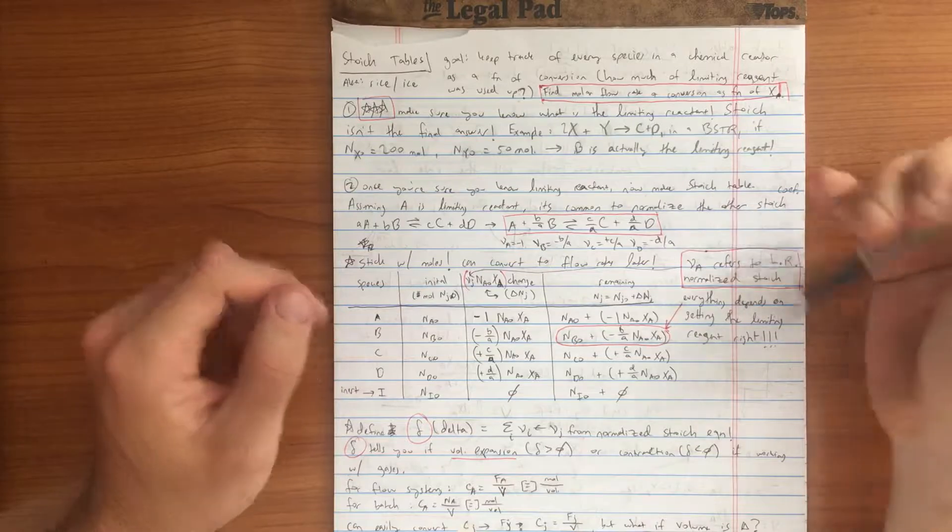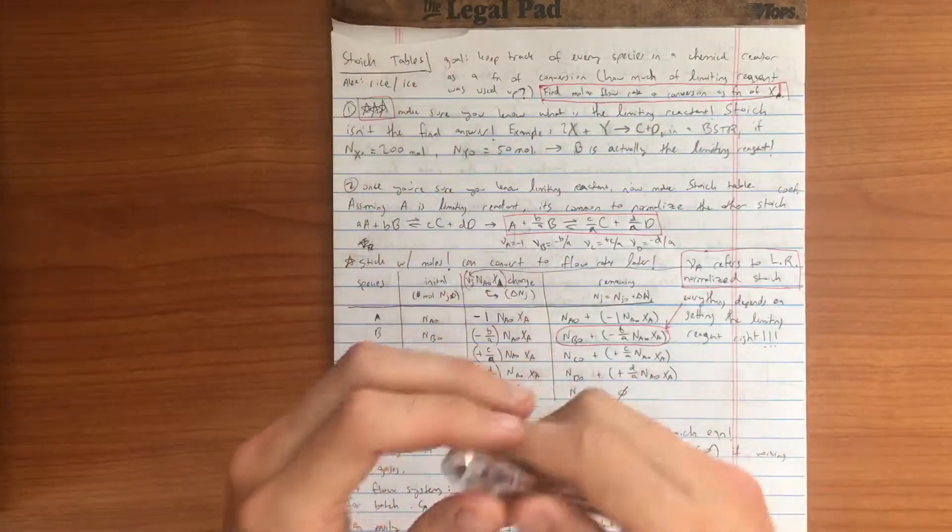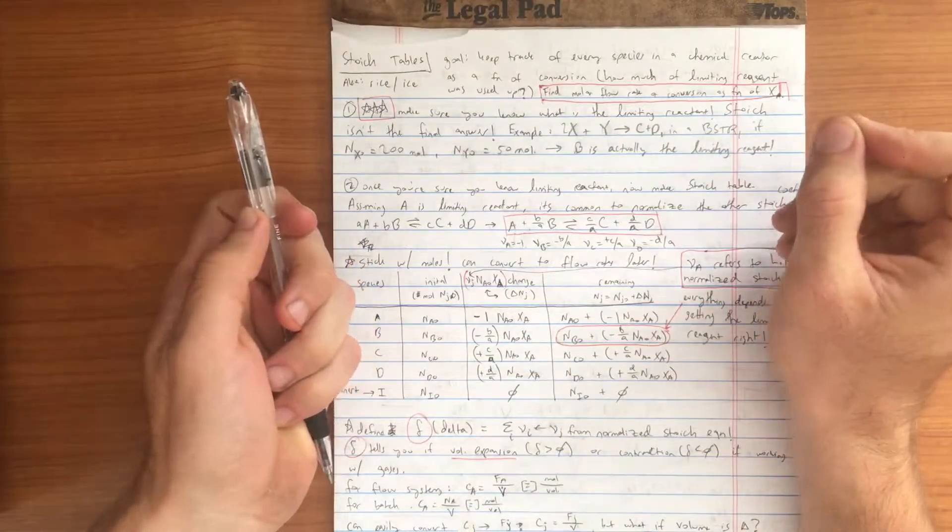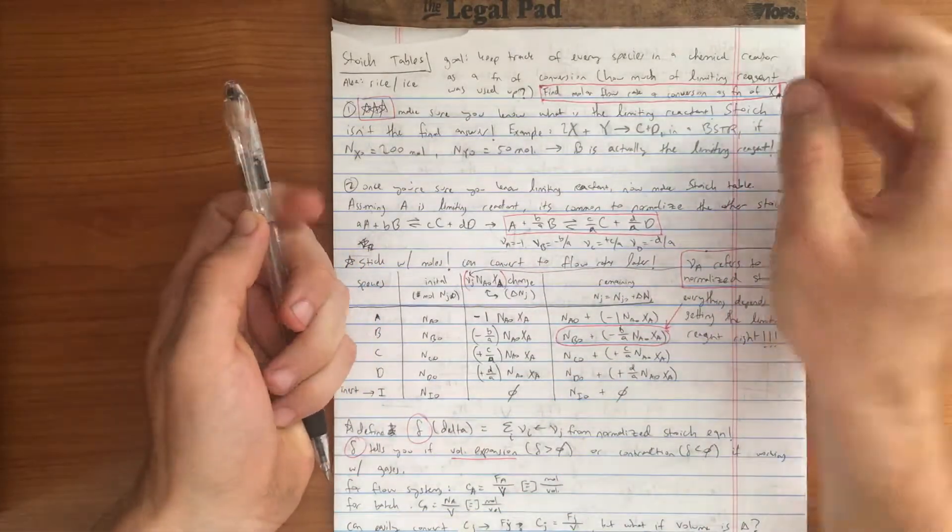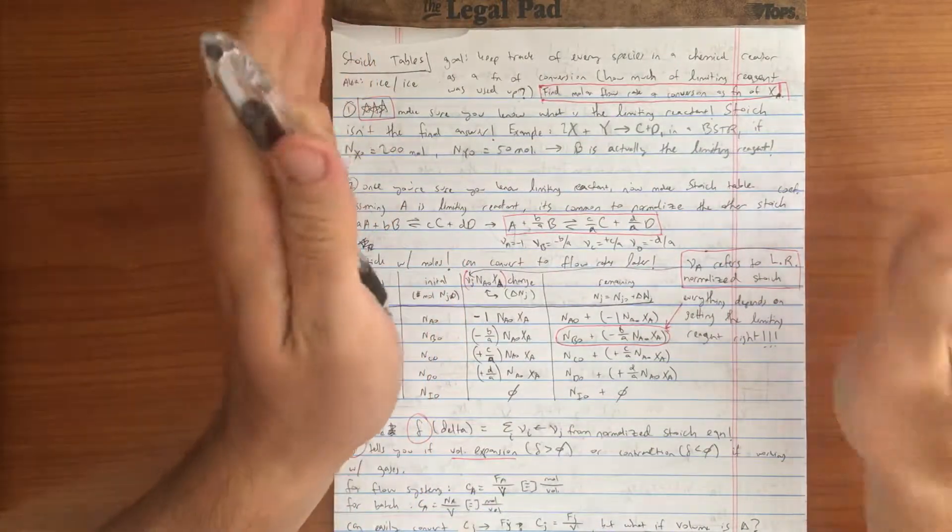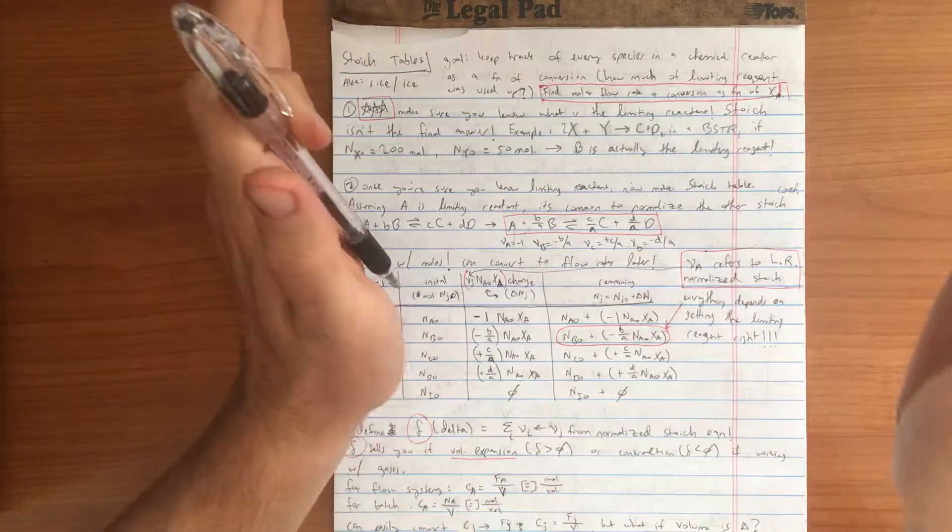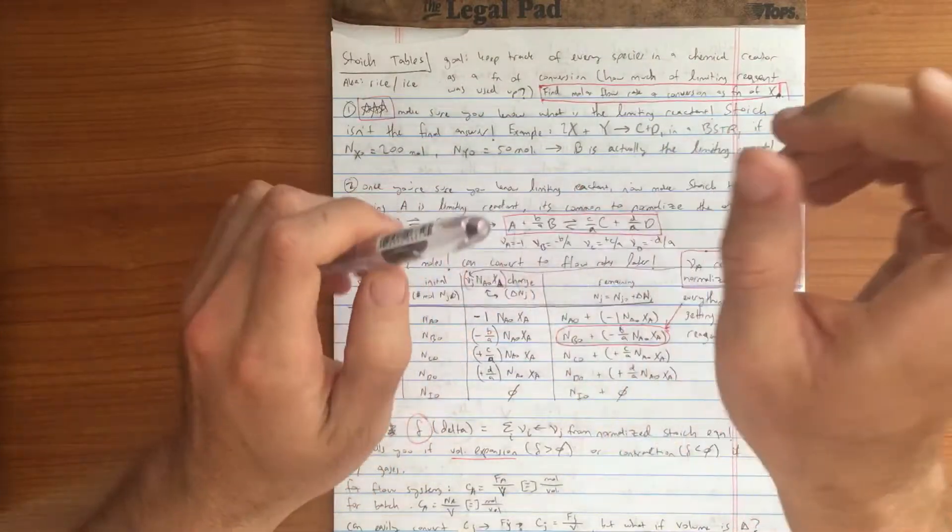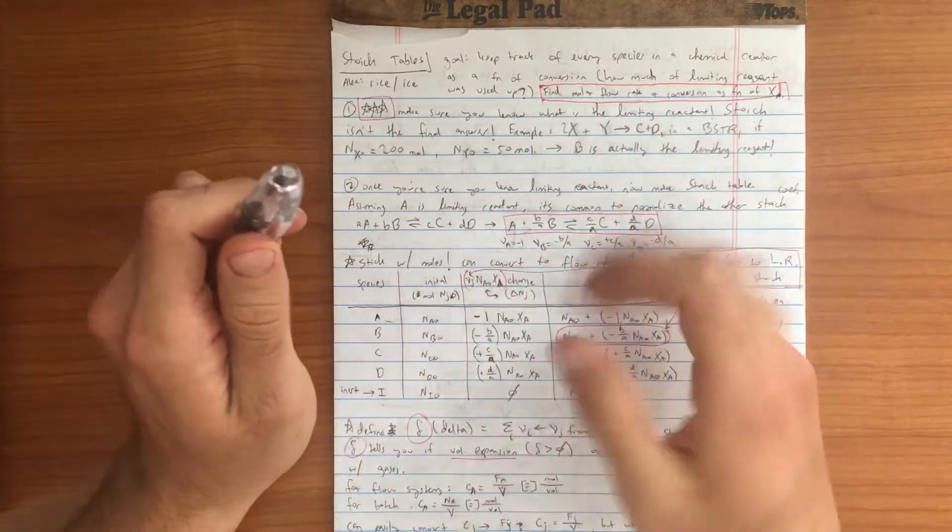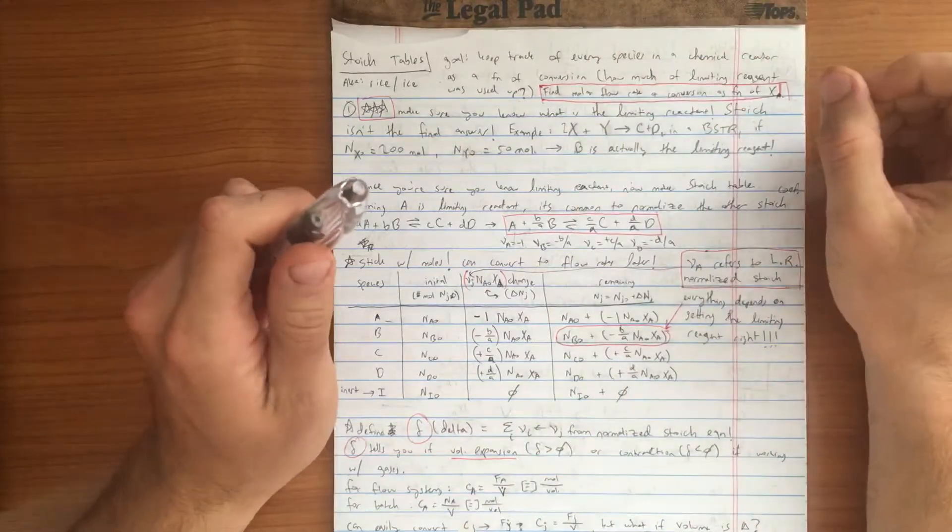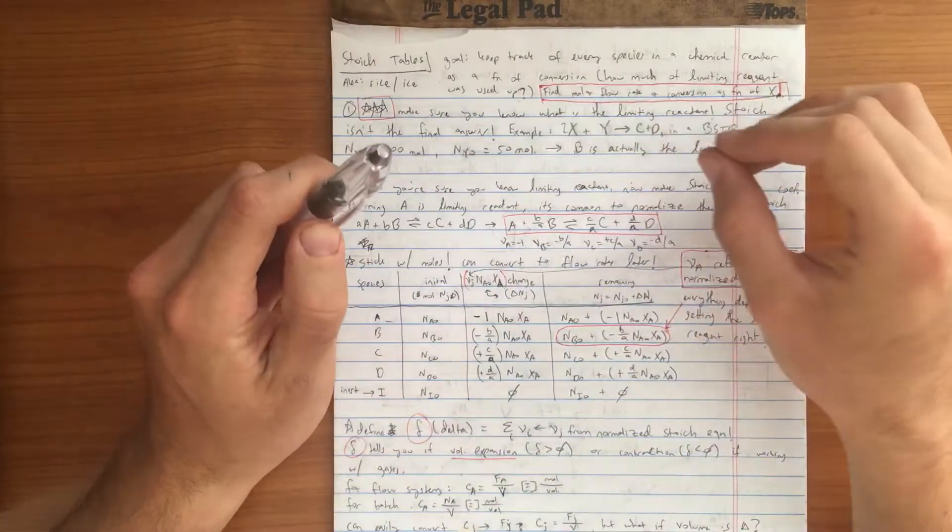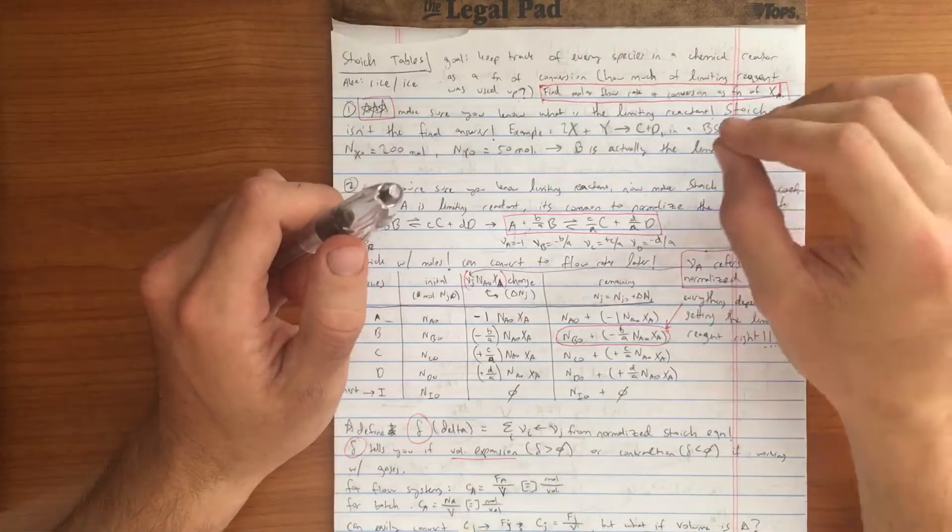For example, if you had a plug flow reactor and you needed to know what concentration of species B was present at a particular point, if we assume we have a linear relationship in our conversion from the beginning to the end of the plug flow reactor, a chemical engineer could tell you using stoichiometric tables exactly what concentration or molar flow rate of that particular species you have at that point. It's a very useful tool to have.